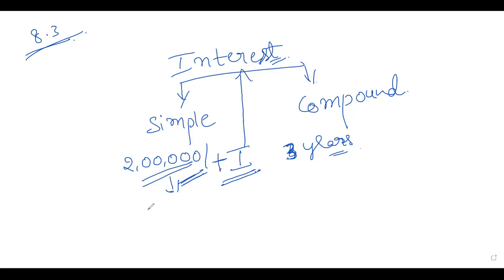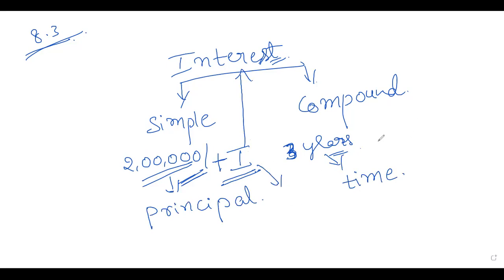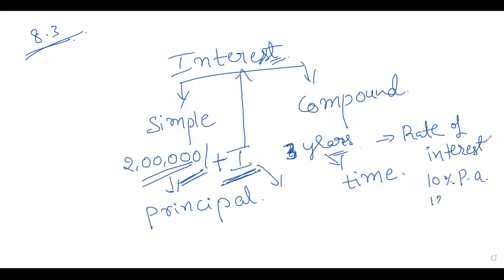So what is this two lakh? It is called principal. The variables are: P is principal, T is time, and I is nothing but interest. Interest depends on the rate of interest. For example, 10 percent PA or 12 percent. In the rate of interest, 10 percent — you know how to express in fraction form — 10 percent is 10 by 100.